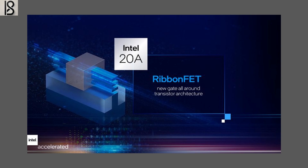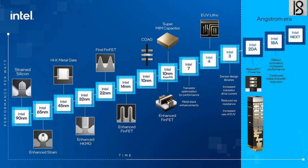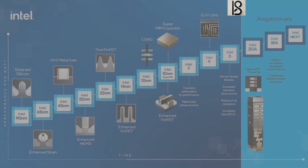Following that, the 18A node is expected to be a major leap that could potentially return Intel to a leadership position. Along with RibbonFET, Intel's 20A and 18A GAAFET processes introduce another notable innovation: backside power. This involves relocating the power lines beneath the silicon substrate, which gives additional routing space. TSMC's N2 process won't include backside power until about a year later, with the release of its second-generation N2 processes, N2P and N2X. This delay is viewed by many as a key advantage for Intel.